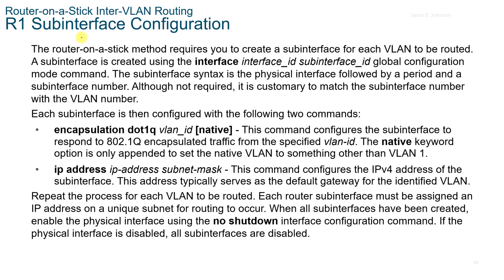The R1 sub-interface configuration for Router on a Stick requires creating a sub-interface for each VLAN to be routed. A sub-interface is created using the interface command in global configuration mode. The sub-interface syntax is the physical interface followed by a period and a sub-interface number. Although not required, it's customary to match the sub-interface number with the VLAN number for ease of identification in your network.